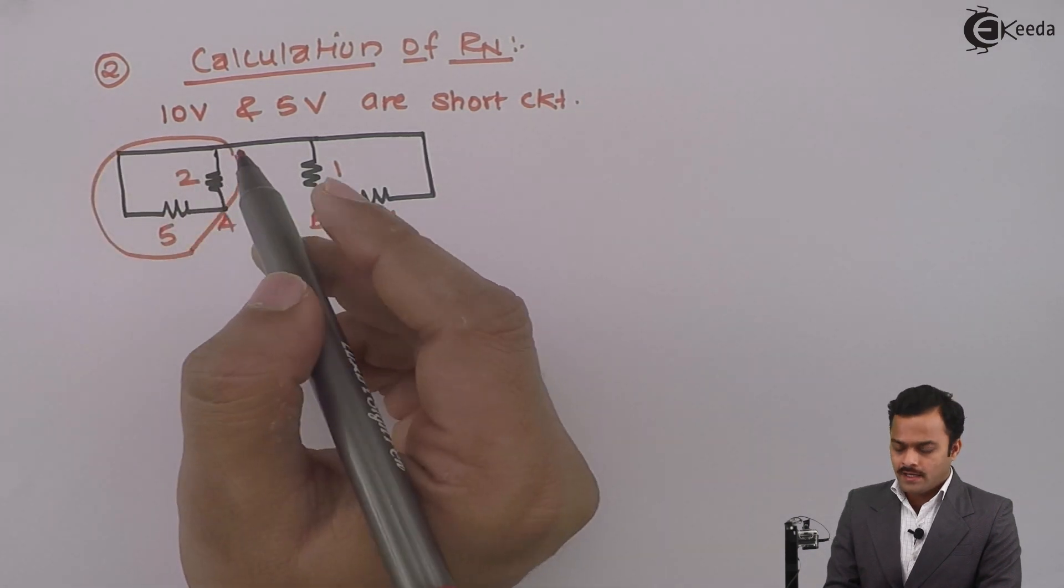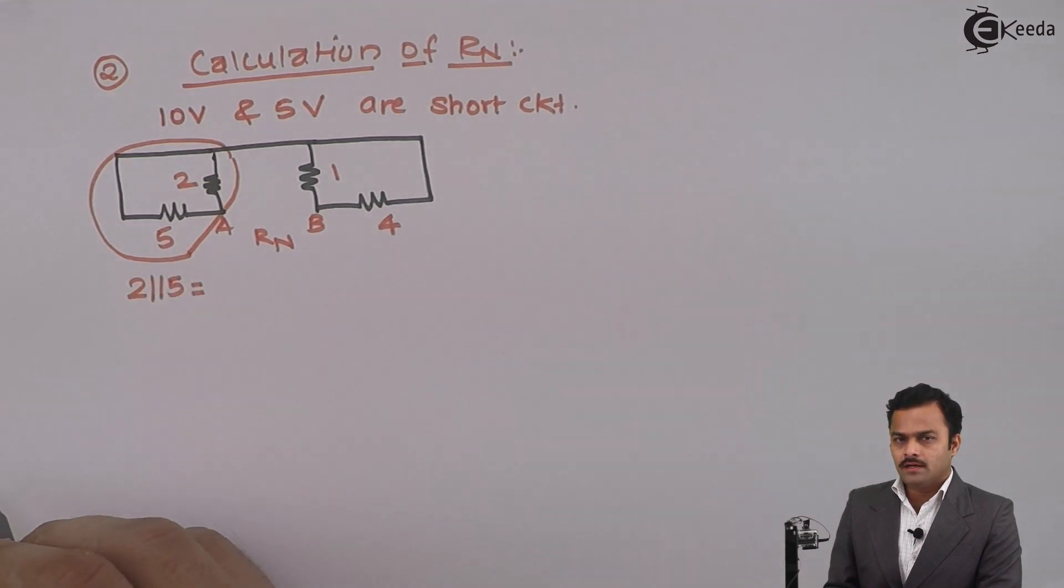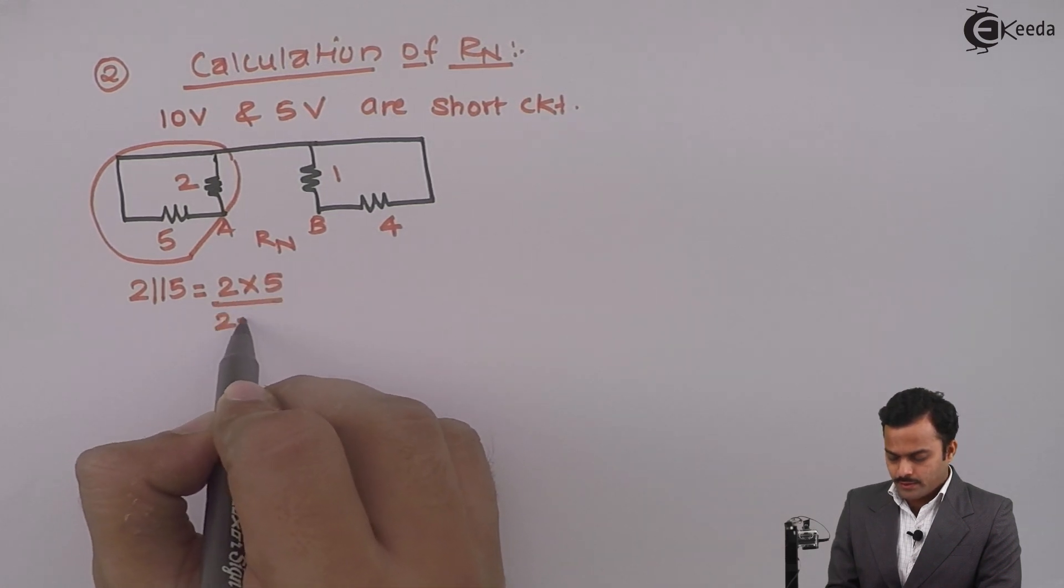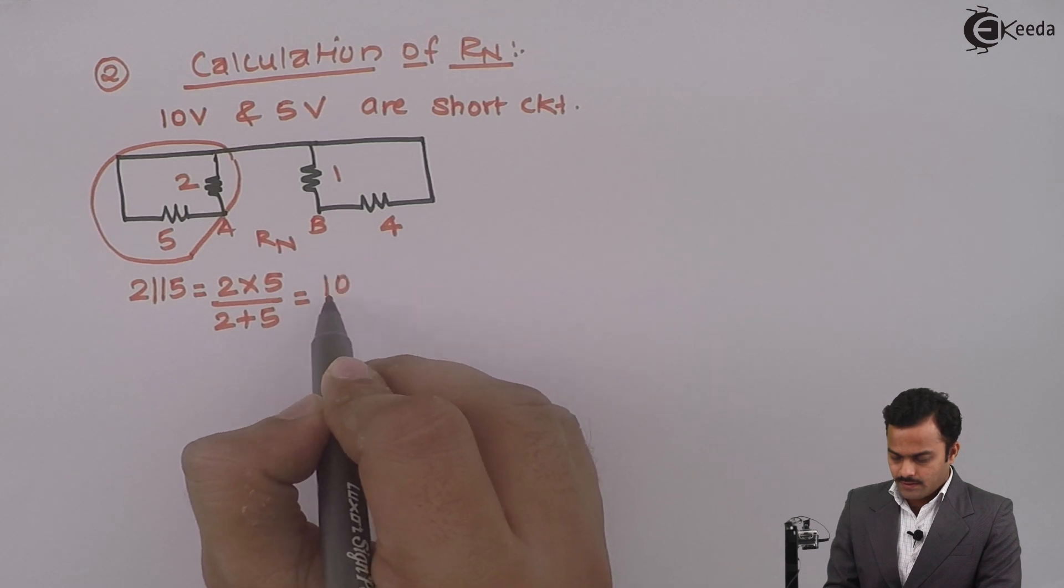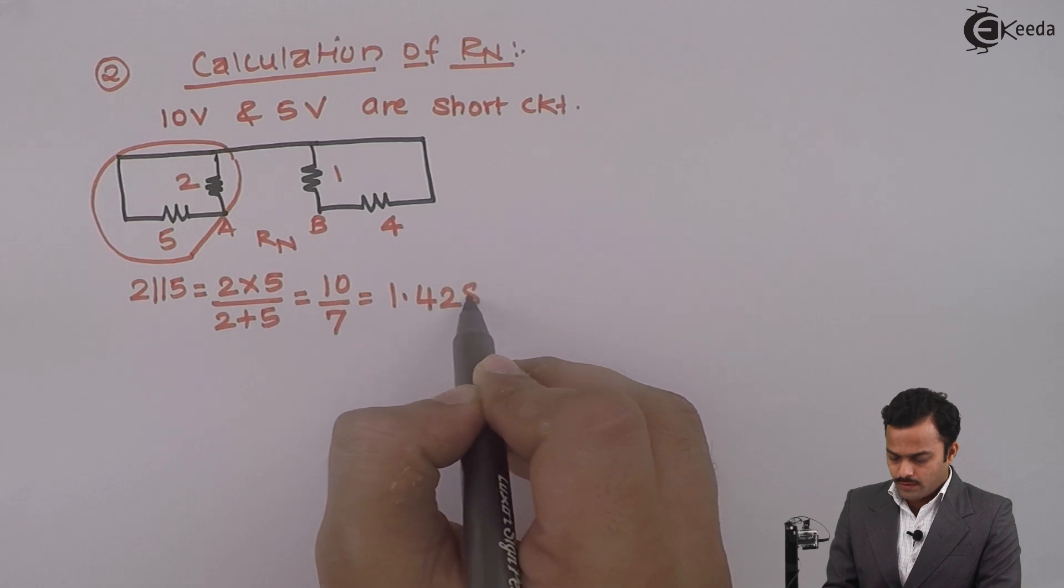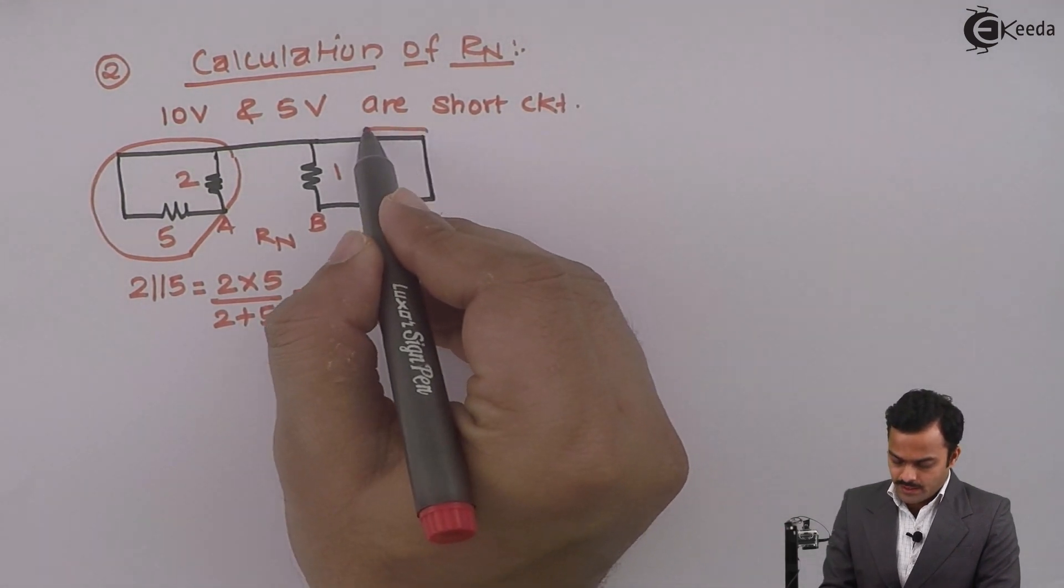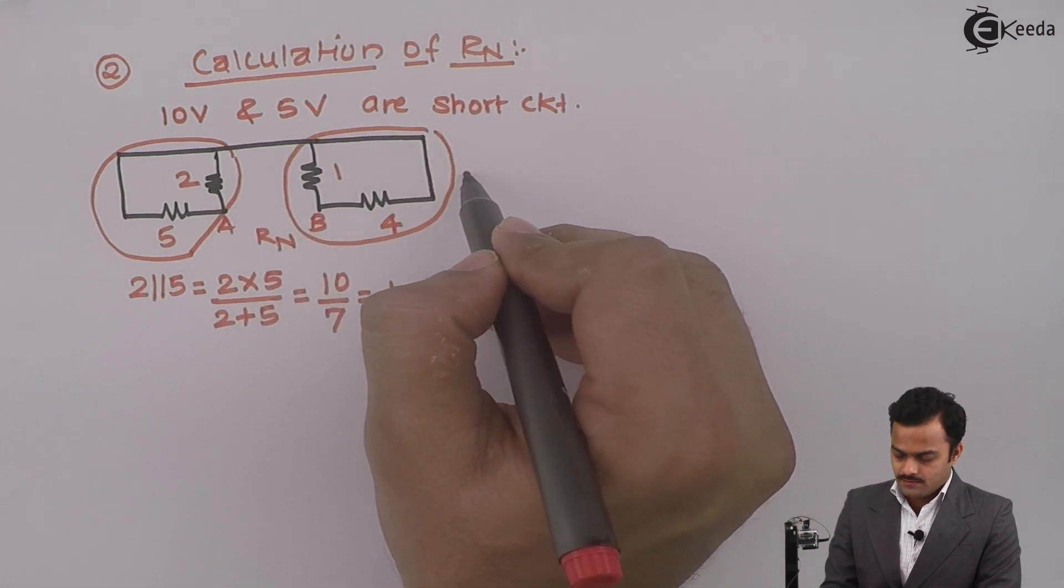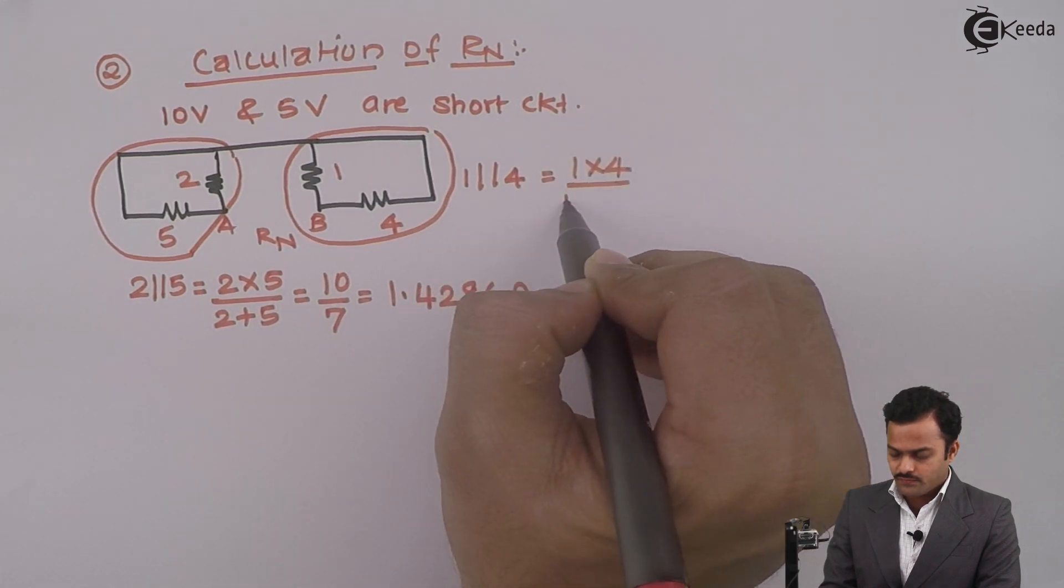So this 2 and 5 are in parallel because those resistances are forming a loop. 2 into 5 divided by 2 plus 5, that will give you answer 10 divided by 7, which is 1.4286 ohms. Similarly, this 1 and 4 are also in parallel.